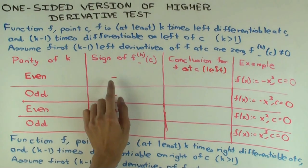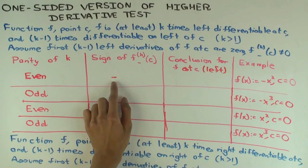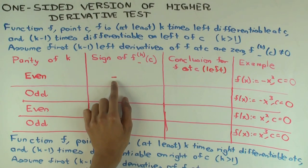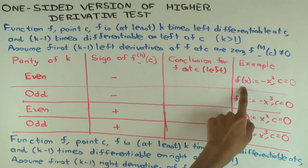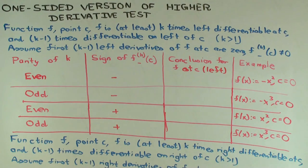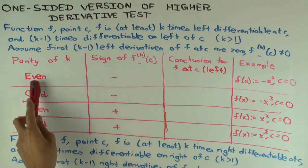Suppose k is even and the kth derivative — which could be second, fourth, sixth, whatever — is negative. What can you say — do you have a strict local max or min? Let's take a prototypical example: negative x-squared at 0. You're interested in the behavior on the immediate left. How many times do you differentiate to get a non-zero derivative? Twice — so it's even and negative.